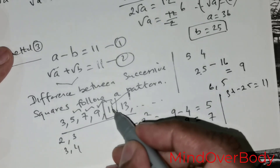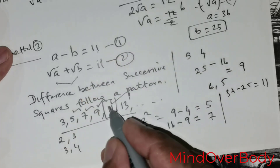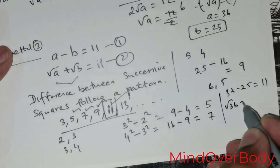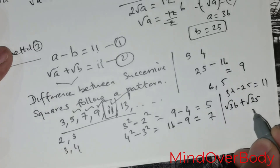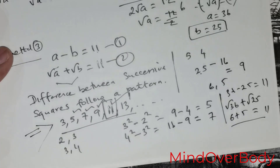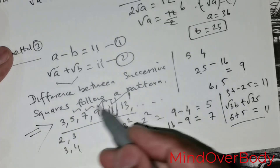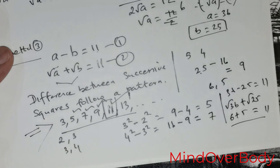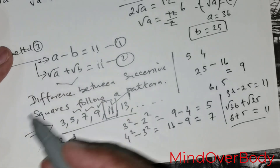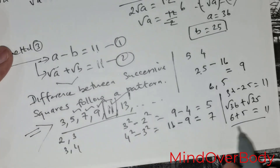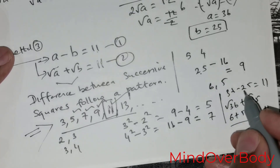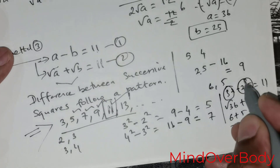That is exactly what we are looking for. 11 is the difference, so A equals 36 and B equals 25. We also check: root of 36 plus root of 25 is 6 positive 5 equals 11, which matches equation 2. For this method, you don't need any calculations — you can directly recognize the pattern and produce the values as A equals 36 and B equals 25.